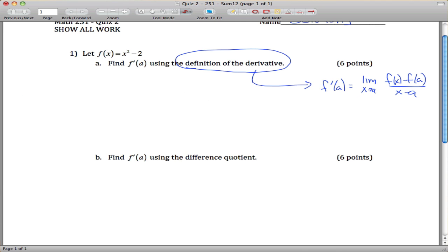Switch colors. f prime of a is equal to f of x minus f of a divided by x minus a. These parentheses are important. You want to subtract all this stuff. If you don't distribute the subtraction sign, things won't work out.